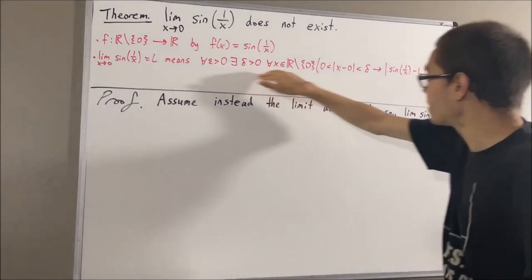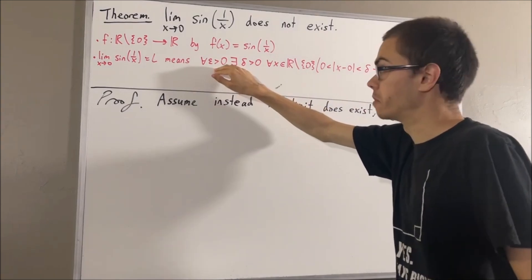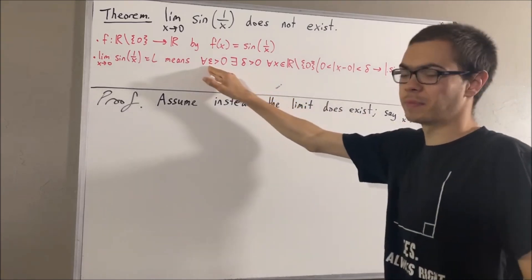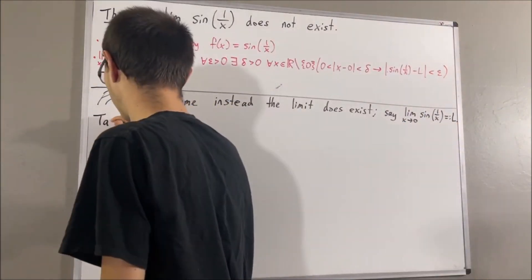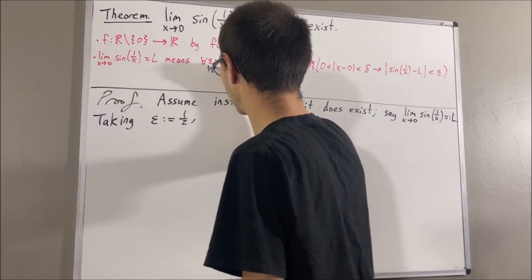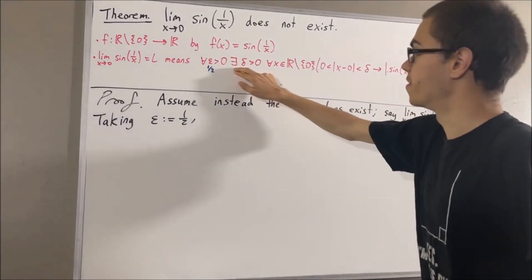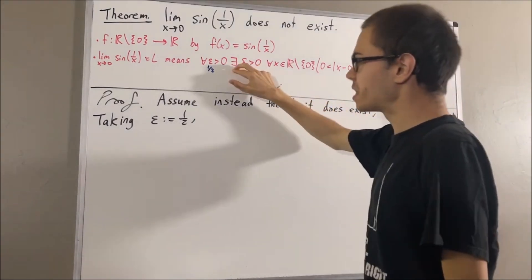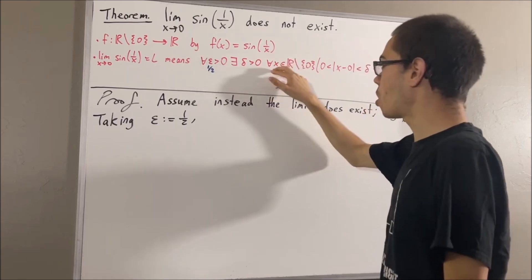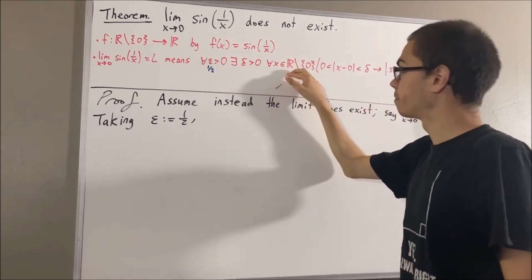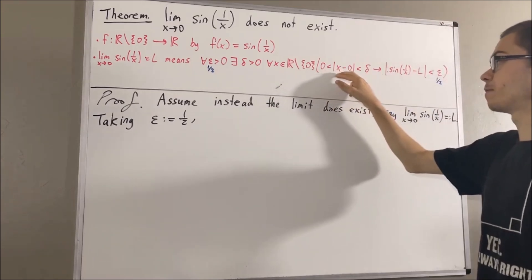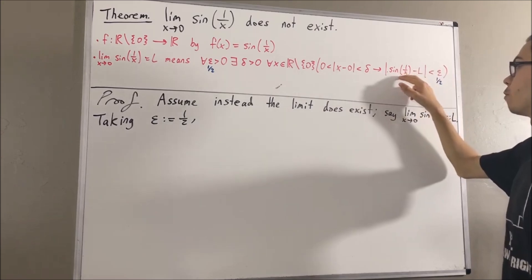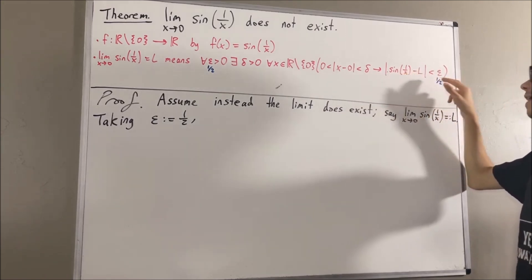This statement works for every positive real number, so in particular it must work for the positive real number one-half. Taking epsilon to be one-half, we have that there is some delta greater than zero such that for all non-zero x, if zero is less than the absolute value of x minus zero and less than delta, then the absolute value of sine of 1 over x minus L is less than one-half.